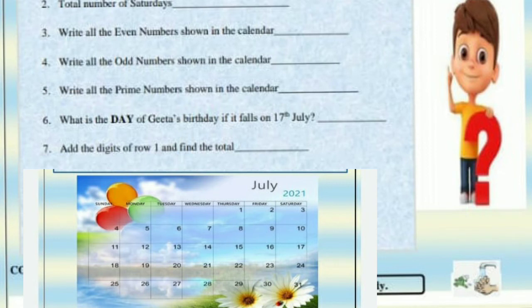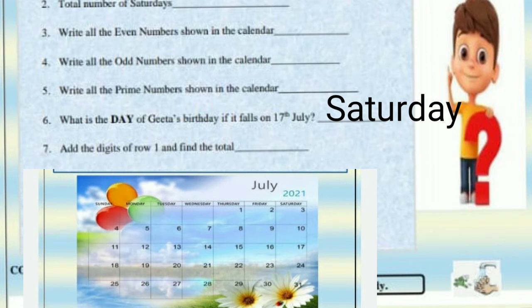Sixth: what is the day of Gita's birthday if it falls on 17th July? It's a Saturday — you can see it on the calendar.